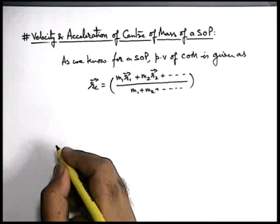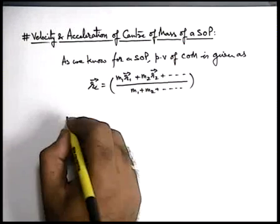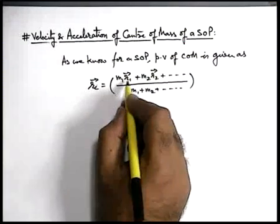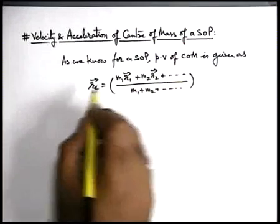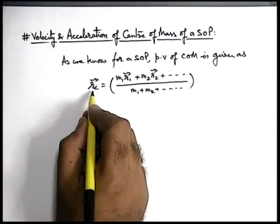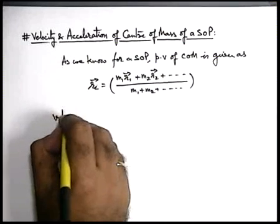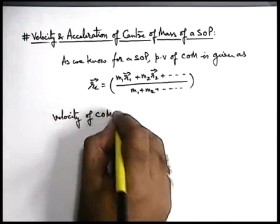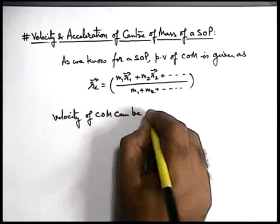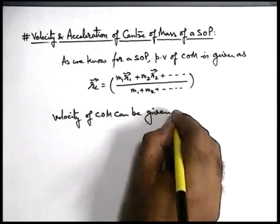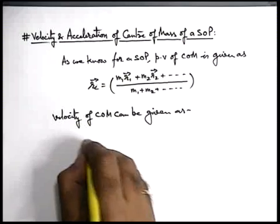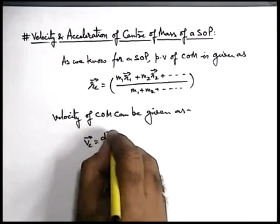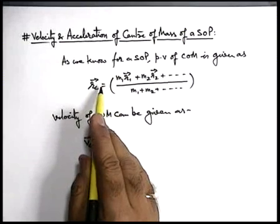Now if we are required to find the velocity — obviously if the other masses are moving, the centre of mass will also move. So we can say the velocity of centre of mass, v_c, can be written as dr_c by dt, which is the time derivative of the position coordinate of the centre of mass.